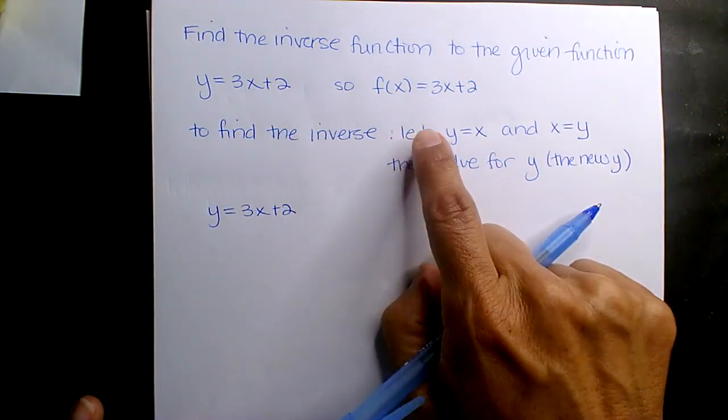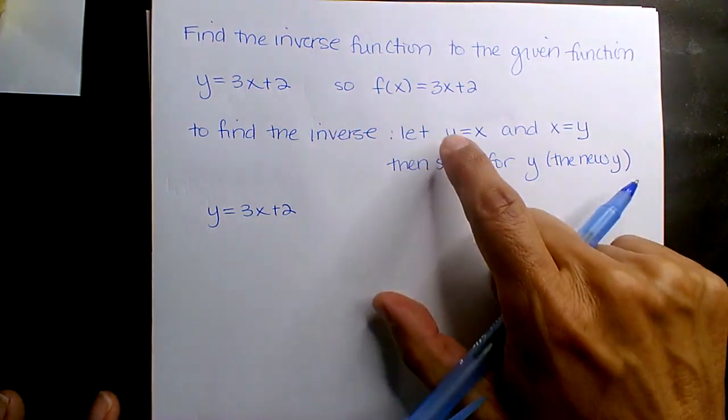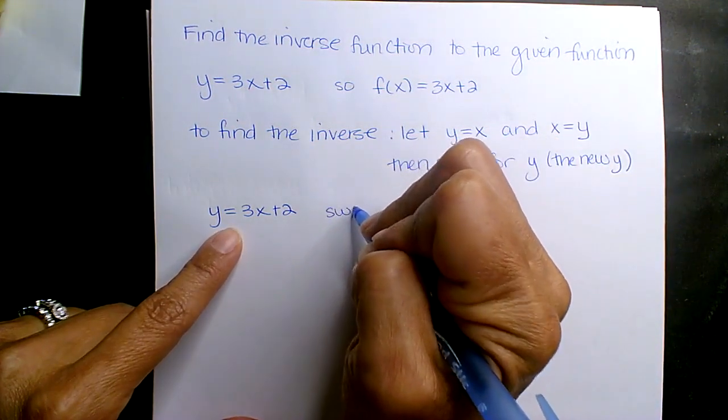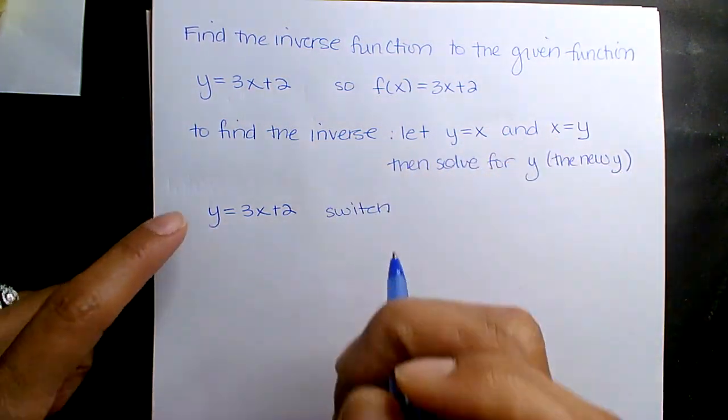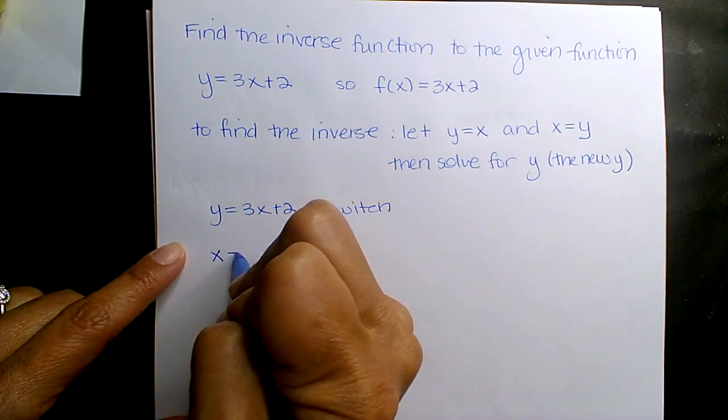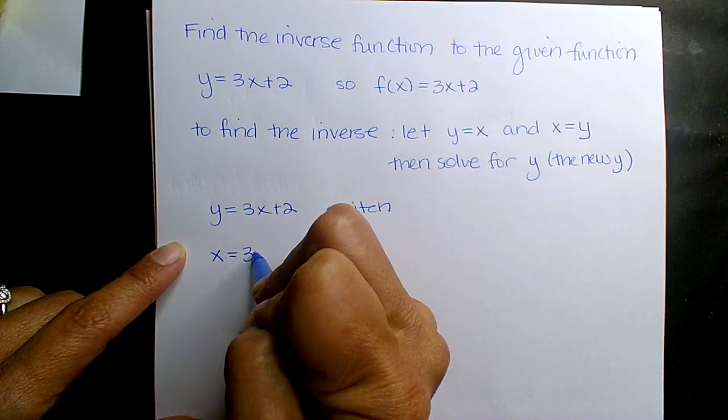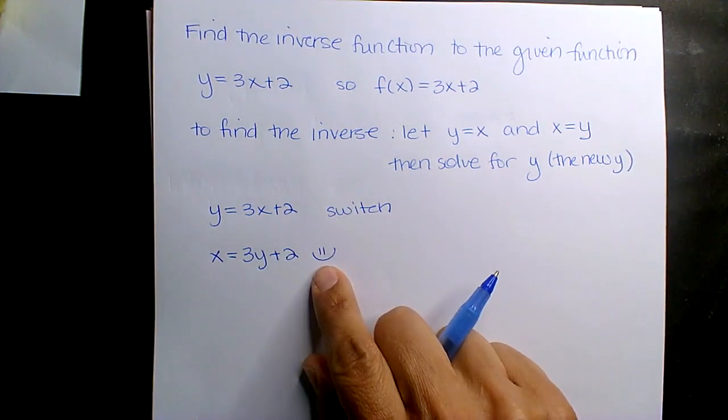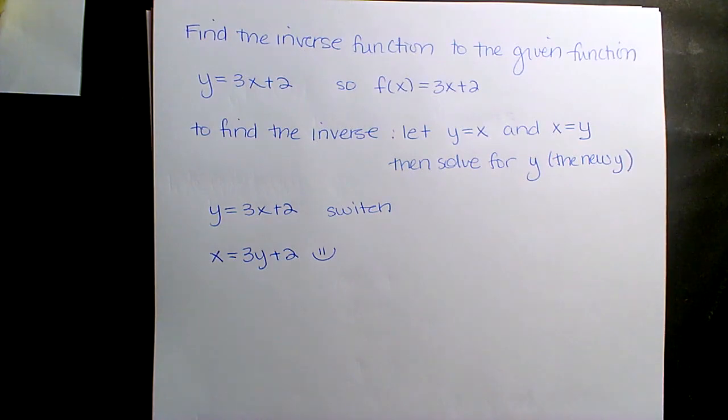Alright, so to find the inverse, you switch the variables. So you let y equal x and you let x equal y. Okay, so if I'm going to switch the variables, y is going to become x and x is going to become y and that's really the major step and you guys are really good at this. And then all you do is you solve for y, which means you use your inverse operations. That's it.